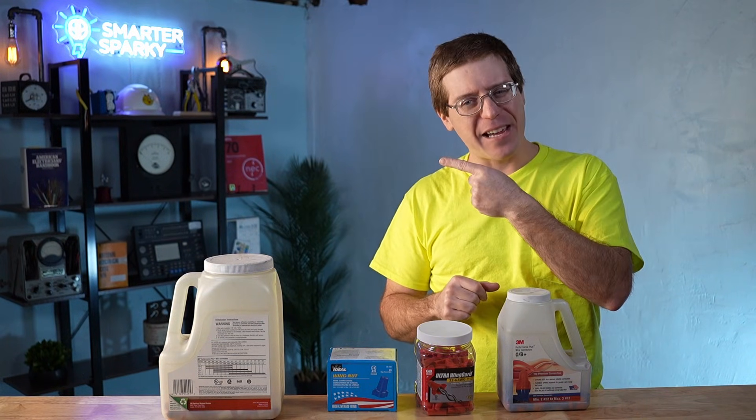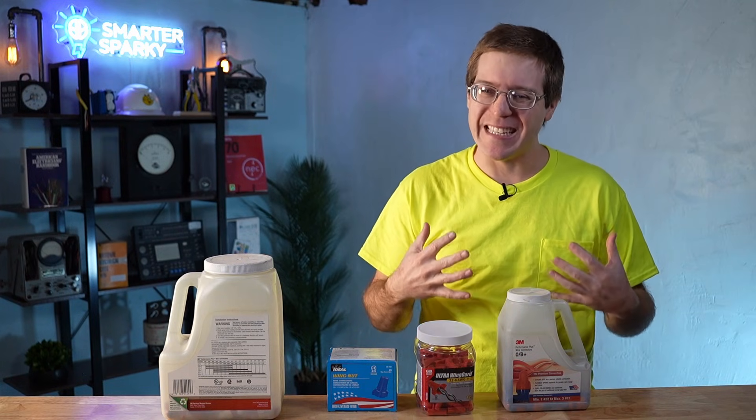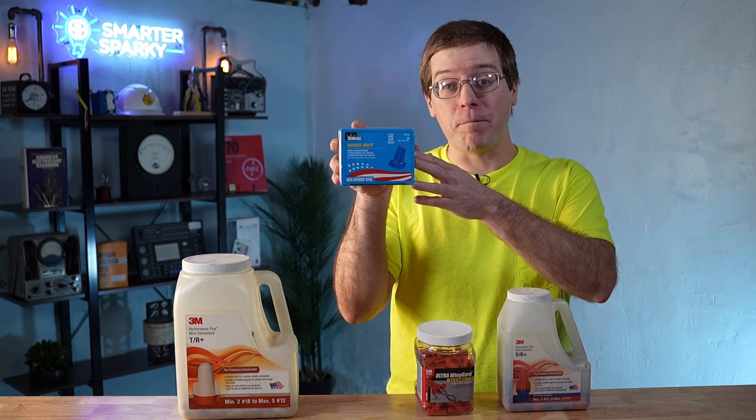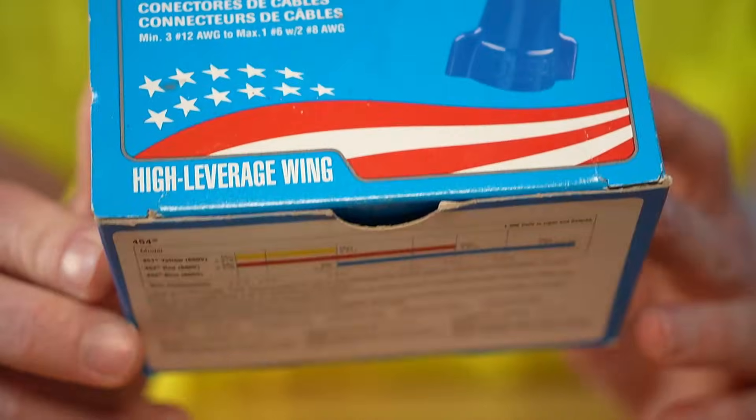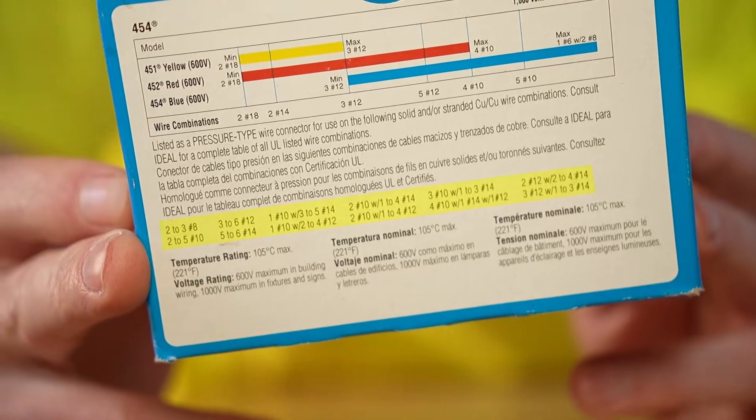but they also have a wire combination matrix available online that lists all of the acceptable combinations. Perhaps in a future video, we can dive deeper into how to read these matrices. This box of big blues includes the list of all approved combinations right on the box.